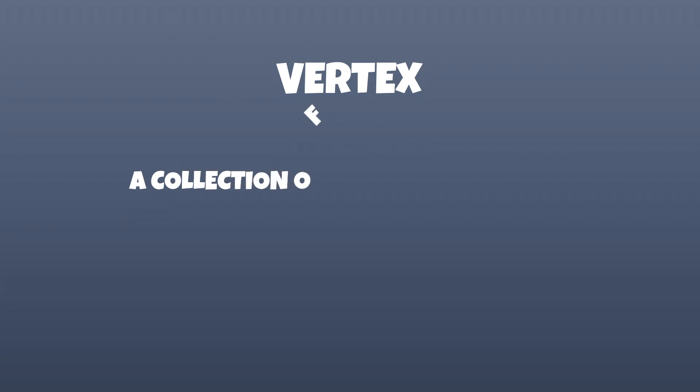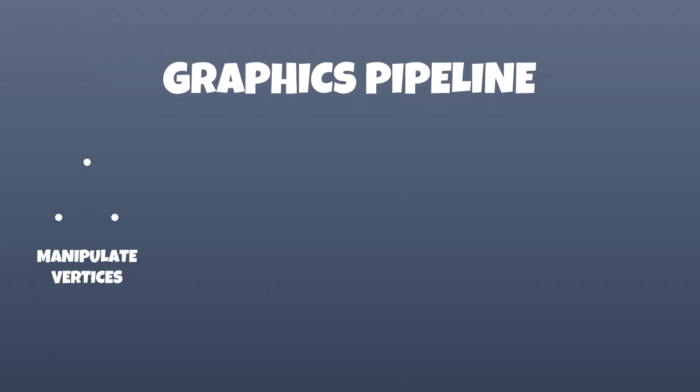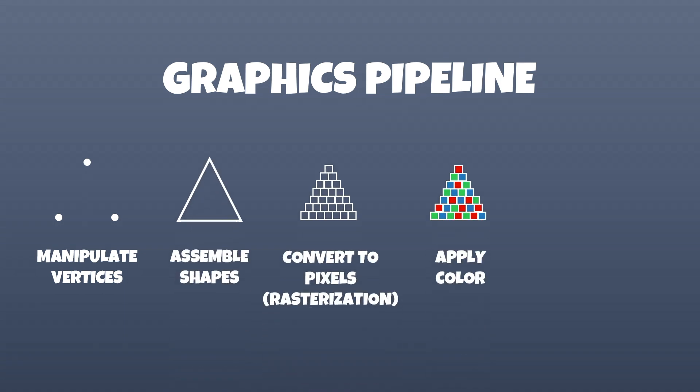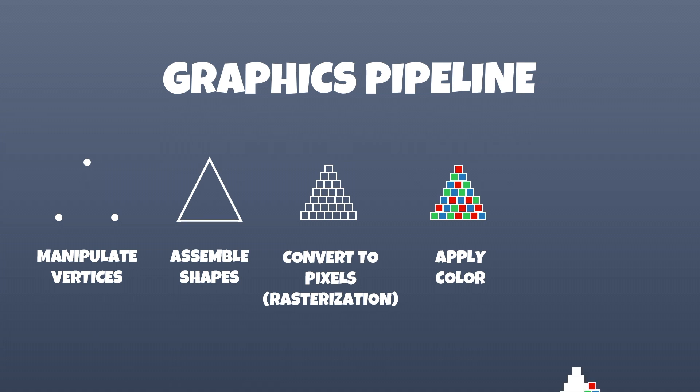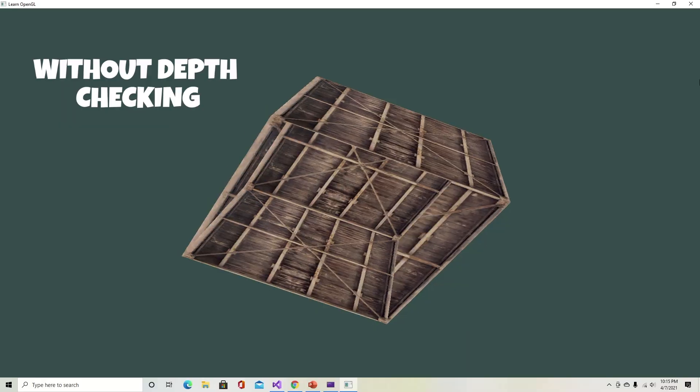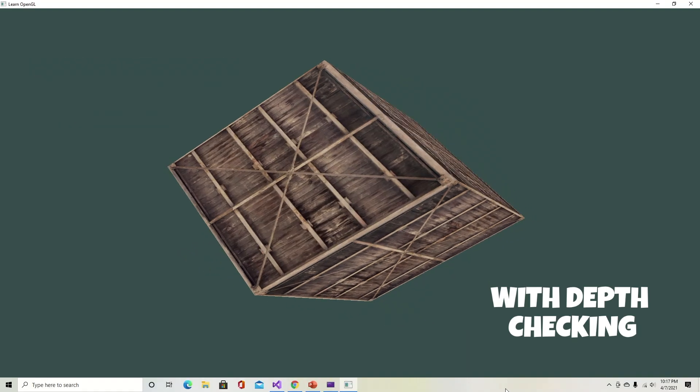At the highest level there's the graphics pipeline, which takes 3D coordinates and maps them to 2D coordinates, which are then mapped to pixels on the screen. The first input to the graphics pipeline are vertices, which are collections of data per 3D coordinate. Two common data values within a vertex would be position and color. The main steps of the graphics pipeline involve manipulating vertices, assembling them into shapes, mapping the shapes into pixels, computing the final pixel color, applying opacity or transparency, and checking for depth. Depth checking ensures that certain surfaces don't render when blocked by others.